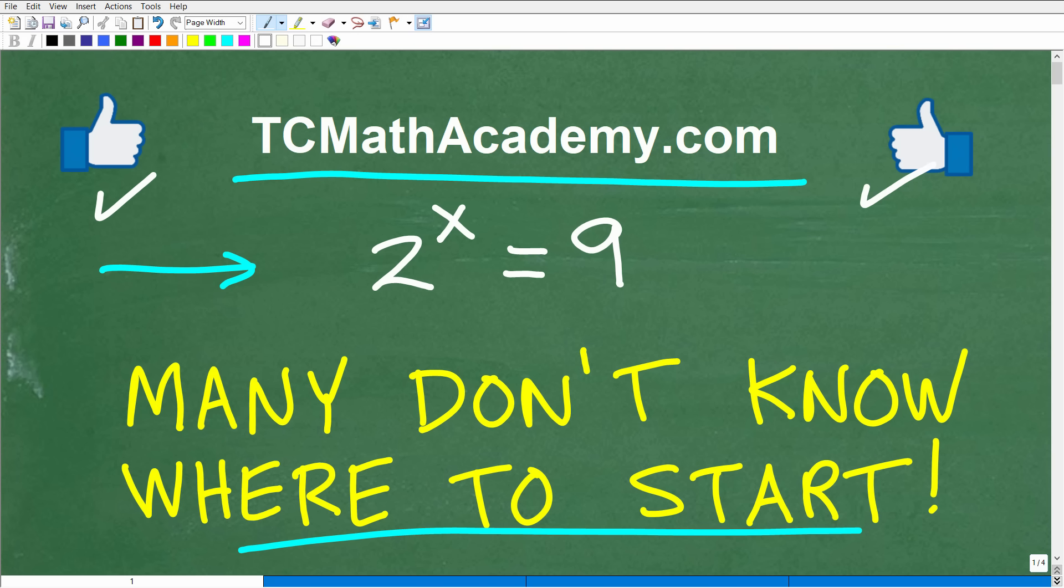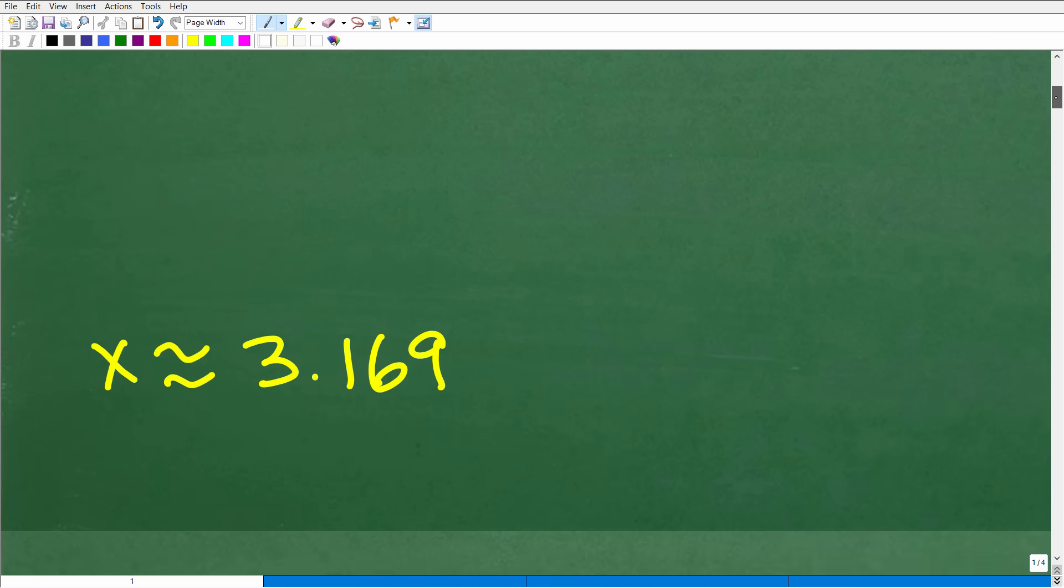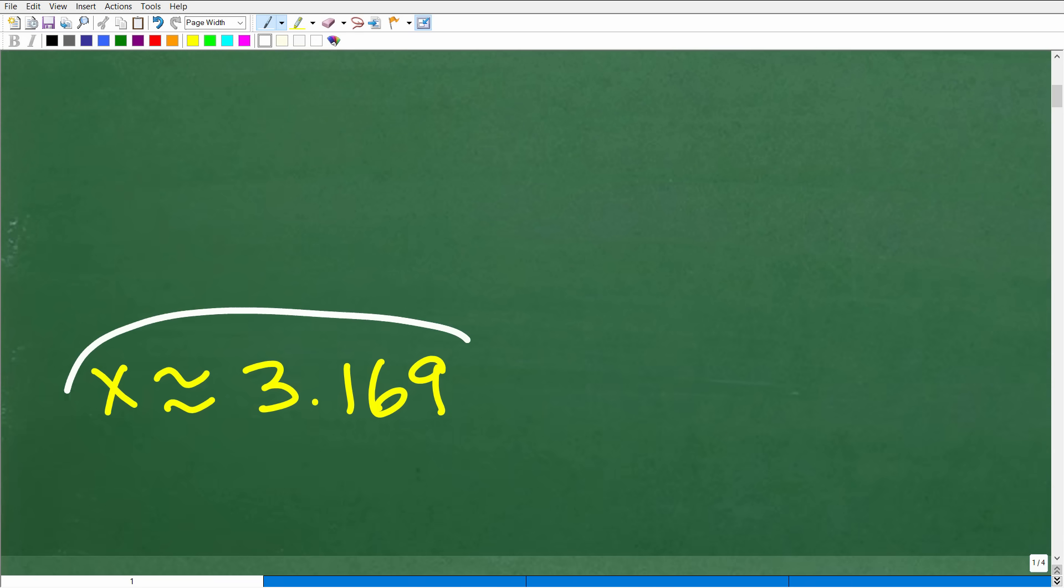Okay, so again, we have 2 to the x power is equal to 9. We want to figure out what x is equal to. So let's go ahead and take a look at the solution right now. Okay, so x is approximately equal to 3.169. Of course, this is a bit rounded off. That's why we have the approximation.